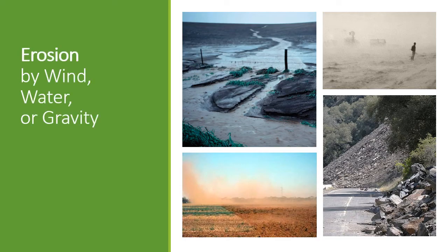Erosion occurs by three different processes: water, wind, or gravity. Wind movement of loose soils happens when there isn't enough vegetation to hold it down — that was the source of a lot of the problems during the Dust Bowl in the 1930s. It can also occur today when we don't have enough vegetation on the soil to hold it to the ground.